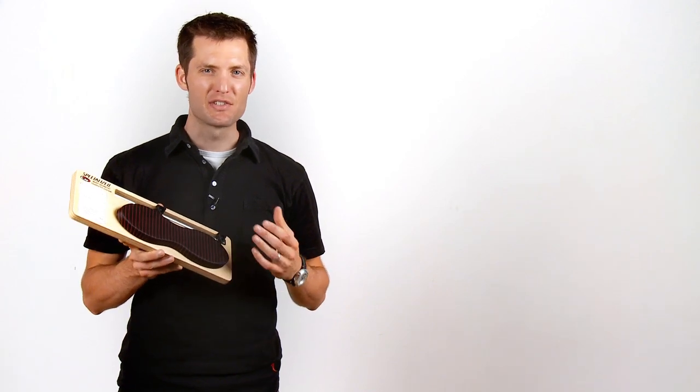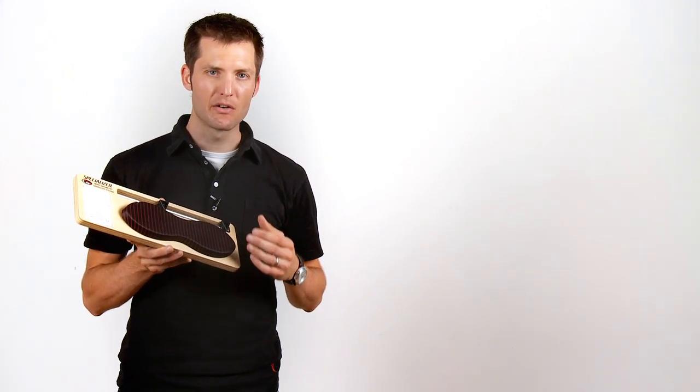This measurement is then combined with the cyclist's riding style to choose the perfect saddle. Our sit bone measuring device is a simple tool to deliver an accurate reading of a rider's sit bone width. It takes the guesswork out of saddle sizing.